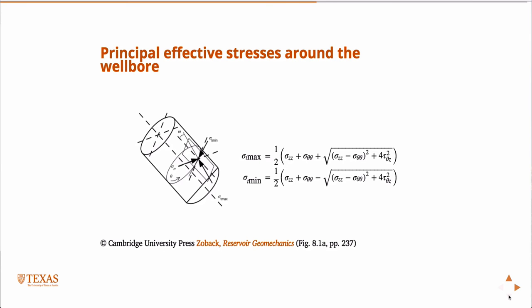The two principal stresses are the minimum, maximum tangential stresses and sigma RR. Those are your three principal stresses. And then if you have the three principal stresses, you can combine those with, let's say, Mohr-Coulomb failure criterion to determine if you're going to have a compressive failure or breakouts in the wellbore.